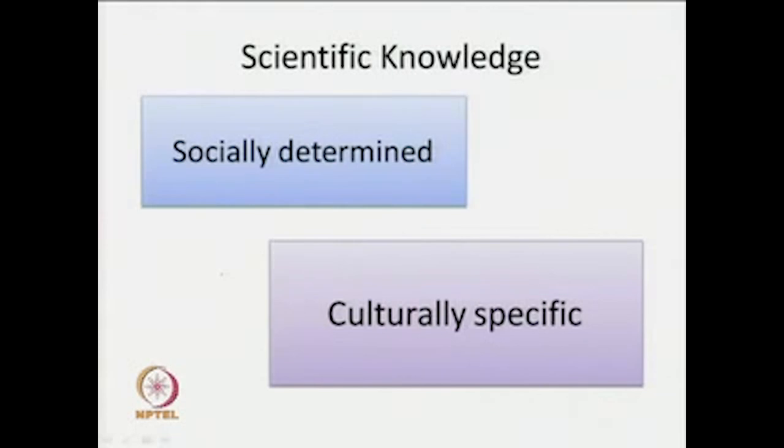One of the first key premises in the cultural way of looking at science and technology is that science is socially determined and culturally specific. Many would not agree — how can science be socially determined? But we shall see, through the example of Newton's Principia, how science also partakes of the signifying practices and meanings in general culture.